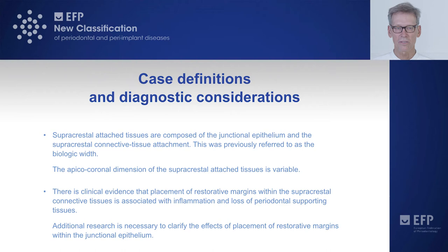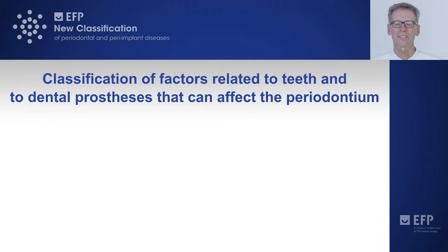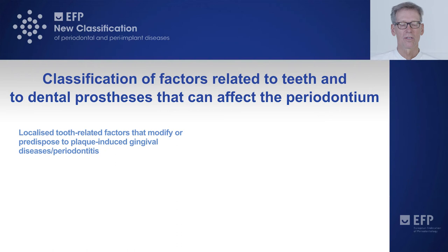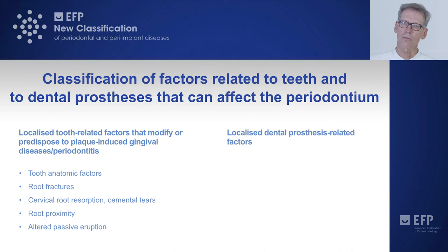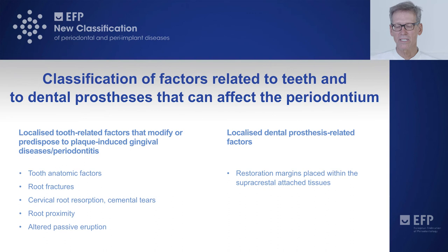Additional research is necessary to clarify the effects of placement of restorative margins within the junctional epithelium. We come to the classification of factors related to teeth and dental prostheses that can affect the periodontium. On one side, tooth-related factors include tooth anatomical factors, root factors, cervical root resorption, cemental tears, root proximity, and altered passive eruption. On the other side, localized dental prosthesis-related factors include restorative margins placed within the supracrestal attached tissues and clinical procedures related to the fabrication of indirect restorations.